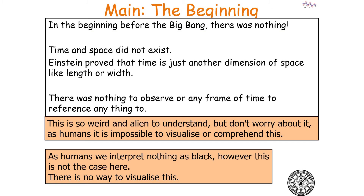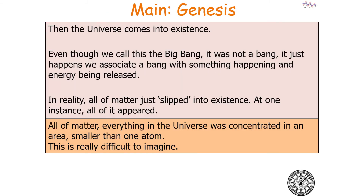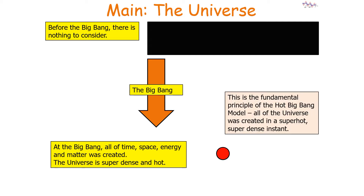Before the Big Bang, there was nothing — time and space did not exist. The universe then came into existence; even though we call this a Big Bang, it wasn't literally a bang. All of matter just slipped into existence, concentrated into an area smaller than one atom. At the Big Bang, all of time, space, energy, and matter was created. The universe was super dense and super hot — this is the fundamental principle of the hot Big Bang model.